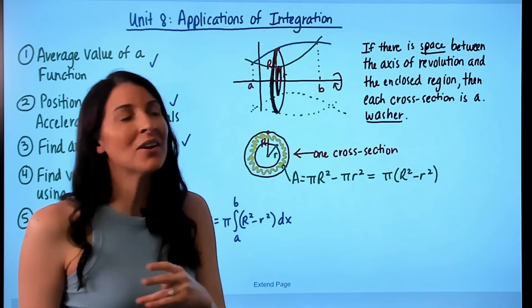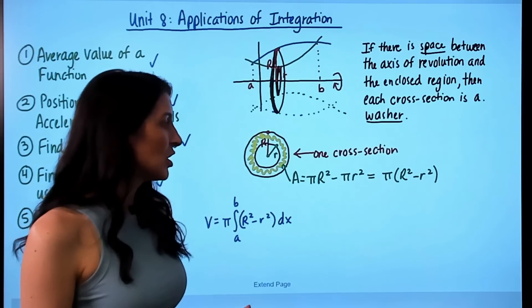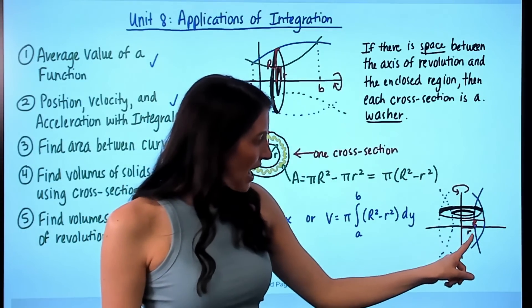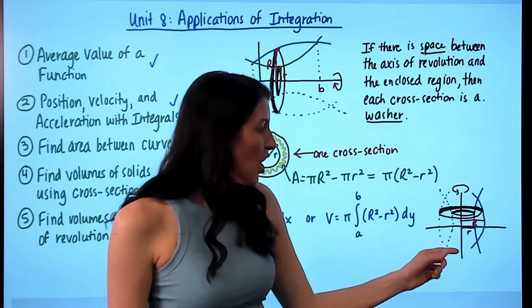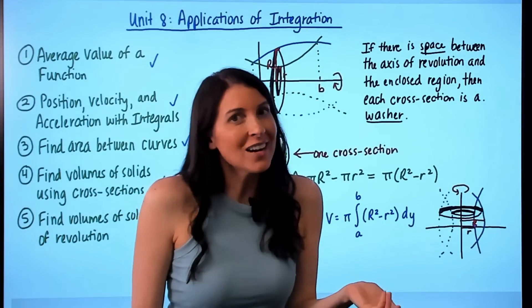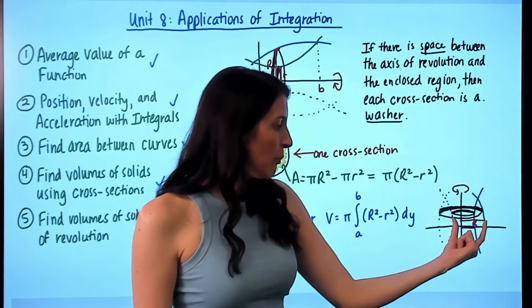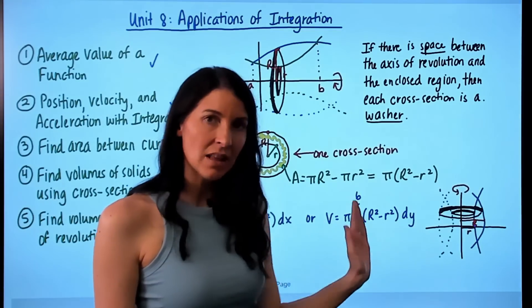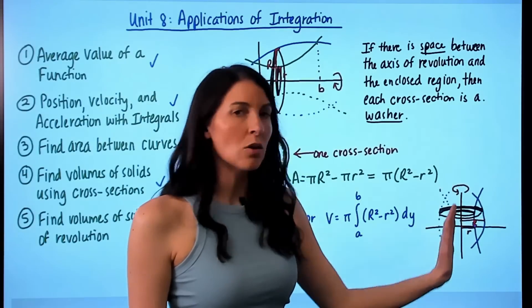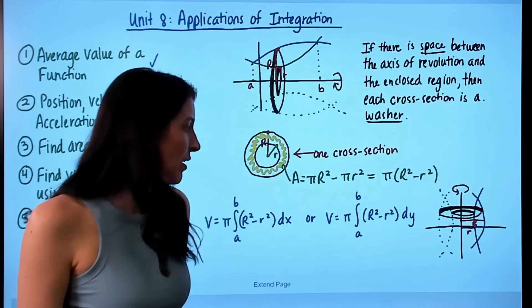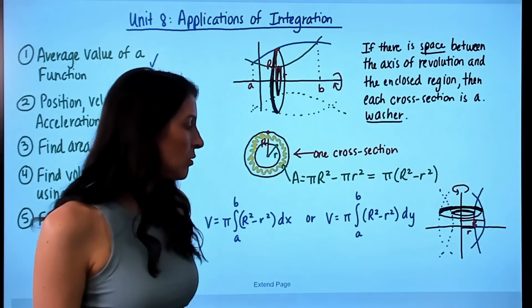This setup applies to any horizontal axis of revolution. If the axis of revolution is vertical, your washer slices will be horizontal, so use only y values. Find the large radius R and small radius r both by doing right minus left. Use dy, with a and b as y values of intersection of the enclosed region, and write all radii in terms of y.